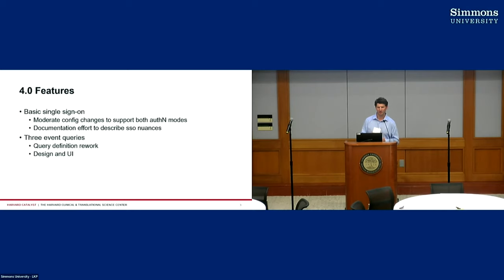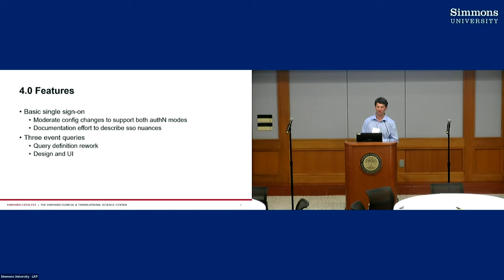The other feature coming out with 4.0 is three event queries. When Shrine implemented temporal queries, we rebranded them as event-based queries and simplified them to only allowing one relationship between two events. We got feedback that the third event is really important — in i2b2 you can do as many events as you want, but we had paired it down to just two events for the basic use case. So we're adding the third event as part of 4.0. We also have reworked our query definition — this is internal to Shrine and doesn't affect how we communicate with i2b2 at all, but in order to adopt the third event we needed a refactoring of how we represent and store queries within Shrine.